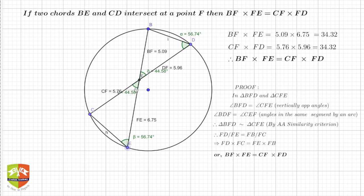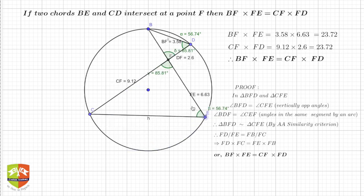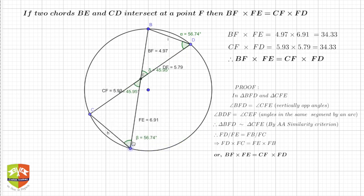The other angle: BDF and CEF, both are the same. Why? Because you can check here, this is alpha 56.74 degrees, beta 56.74 degrees. Irrespective of the point E, the two angles are not going to change. Can you see, it is 56.74 in this case. Hence these two angles are also equal. So these two triangles, BFD and CFE, are always similar by AA similarity criterion.